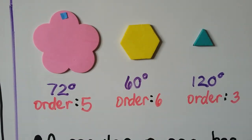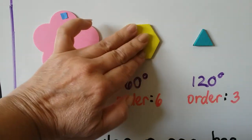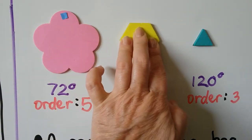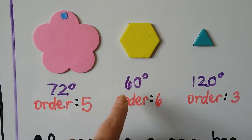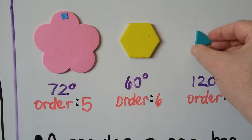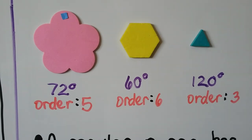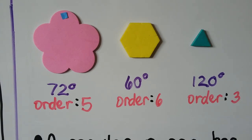This hexagon — we have the flat part on top. If I turn it so that this flat part is on top again, that's a 60-degree rotation, and this would have an order of 6. And this triangle — I can turn it so that this point is on top. That's a 120-degree rotation and that would have an order of 3.